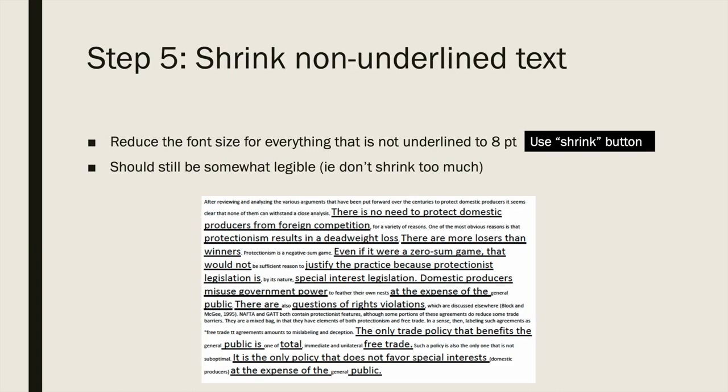The next step is to shrink non-underlined text. Reduce the font for everything that is not underlined to eight points — that's the standard. If you have Verbatim, you can just hit one button that says 'shrink' and it'll do this automatically. Otherwise, it's a really long process of highlighting all the text that isn't underlined and individually shrinking each section, which can take a while. The font should still be somewhat legible — don't shrink it down to one point, because then it looks like you're trying to hide something. It should still be possible to read the non-underlined text if someone wanted to.